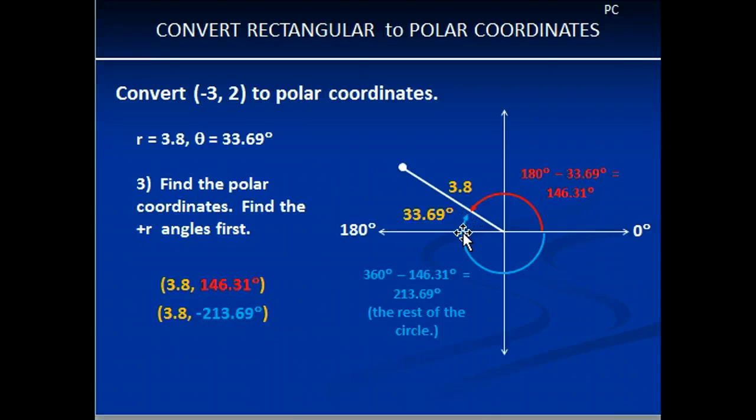So if we subtract 33.69, then that will give us the rest of this angle right here. So we can say 180 minus 33.69 is going to give us 146.31. That is our positive angle. And we can put it right here.